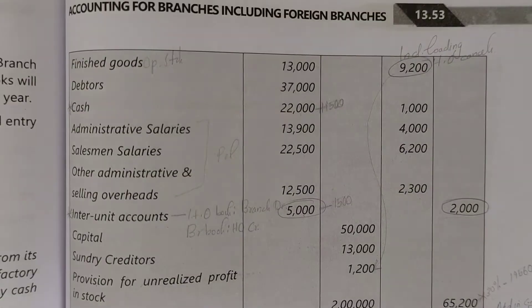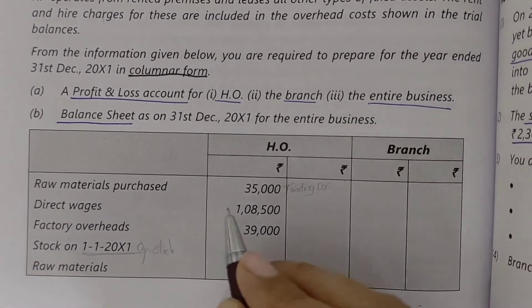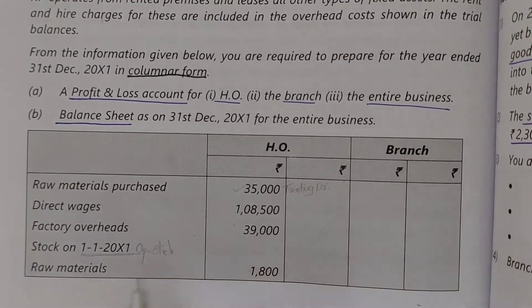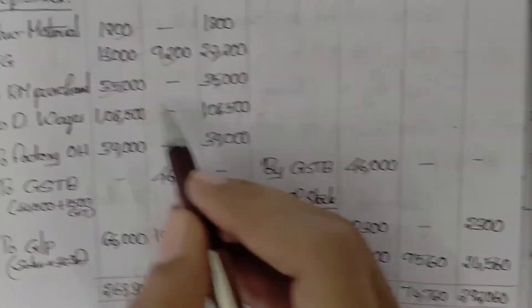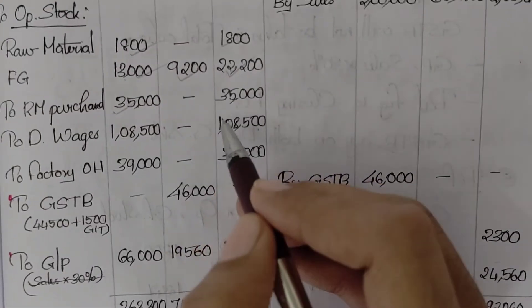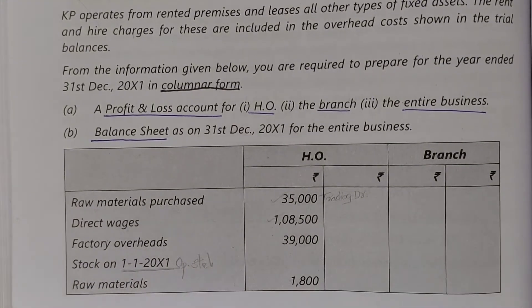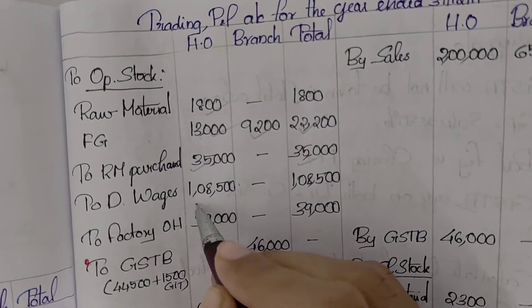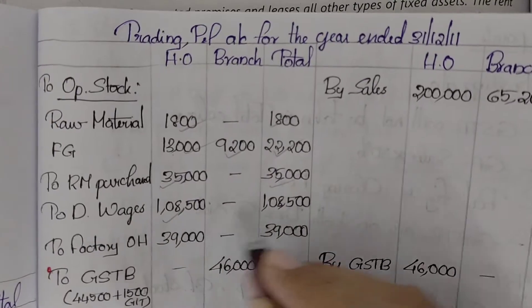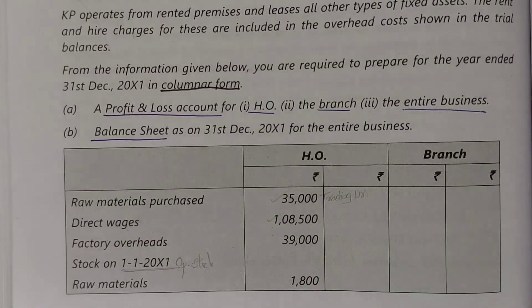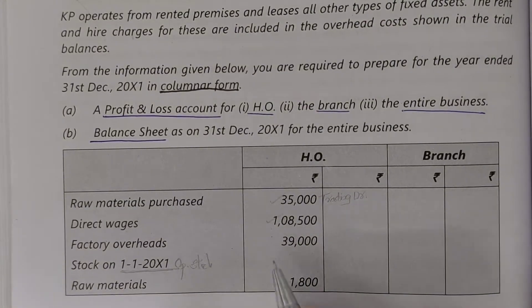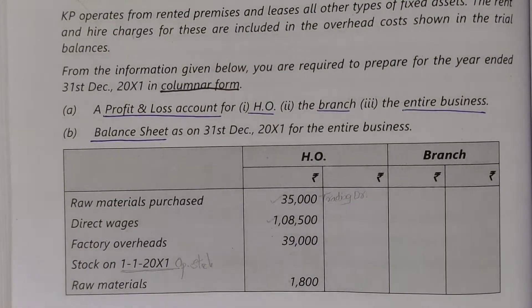Next item: raw materials purchased — head office 35000, total 35000. Next: direct wages — head office 18000, total 35000. Then factory overhead is directly related to the head office business.